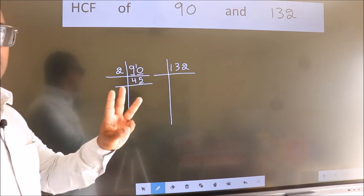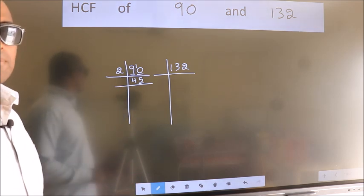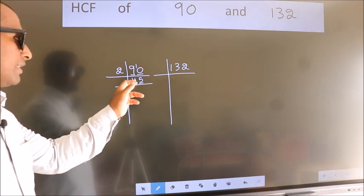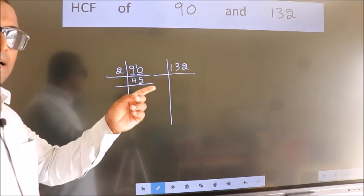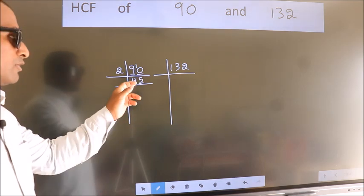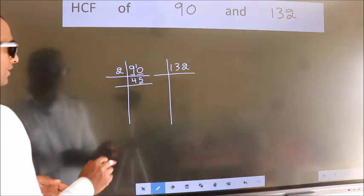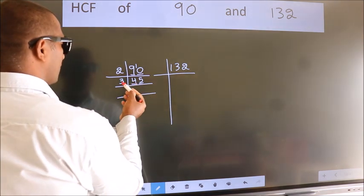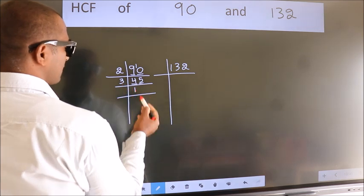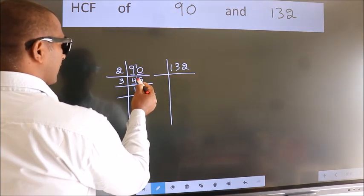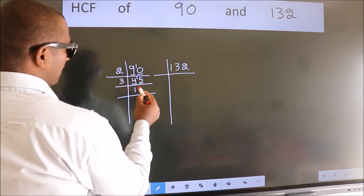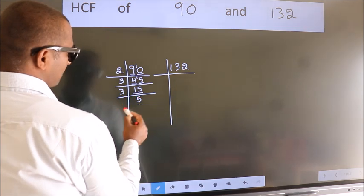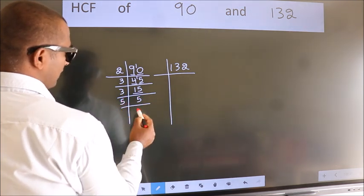Next prime number: 3. To check divisibility by 3, we add the digits: 4 plus 5 equals 9. Is 9 divisible by 3? Yes. So this number is also divisible by 3. Take 3. A number close to 4 in the 3 times table is 3, remainder 1. 1 carried forward makes 15. 3 fives 15. Now 15 is 3 fives 15. 5 is a prime number, so 5 ones 5.